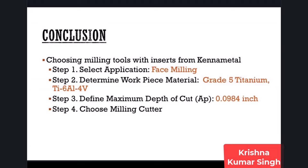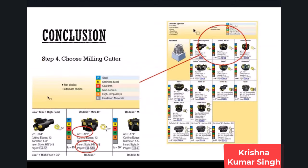In Step 2, Kennametal suggests defining your workpiece material. Our material is grade 5 titanium, Ti-6Al-4V. In Step 3, you define the depth of cut, which is 0.0984 inches. In Step 4, you select your cutter based on application, depth of cut, and material. In the Kennametal catalog, every application type such as face milling has a dedicated cutter page showing suitable cutters.